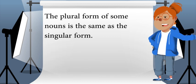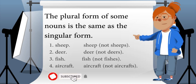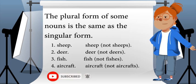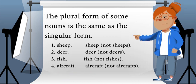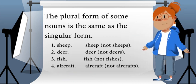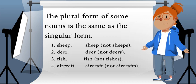The plural form of some nouns is the same as the singular form. Sheep becomes sheep, not sheeps. Deer becomes deer, not deers. Fish becomes fish, not fishes. Aircraft becomes aircraft, not aircrafts.